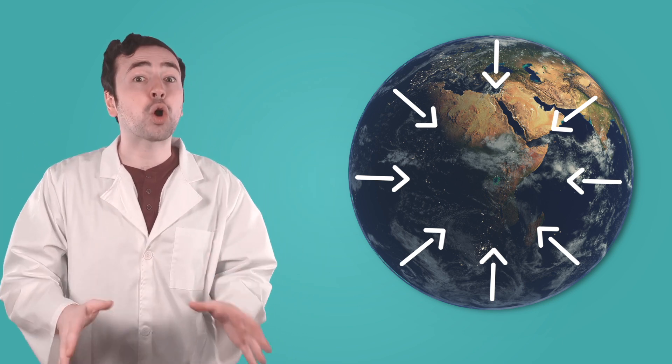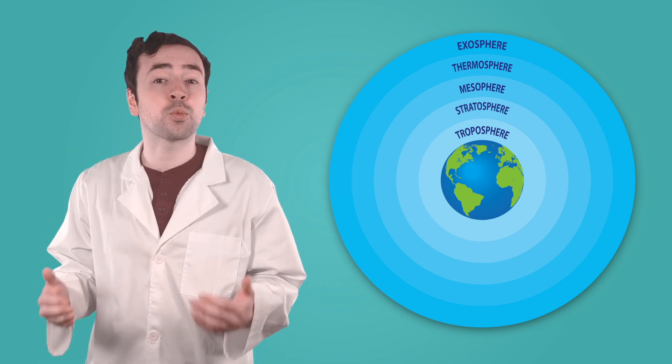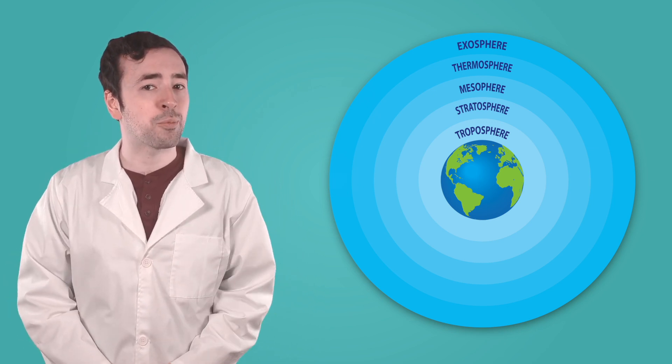This jacket of air makes life on Earth possible. It keeps us warm, lets us breathe, and protects us from dangerous things in outer space. The Earth's atmosphere is split into five layers and each layer plays a role in supporting life on our planet.